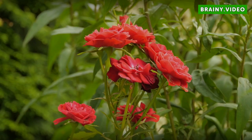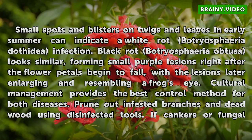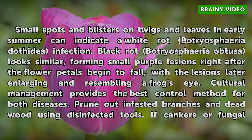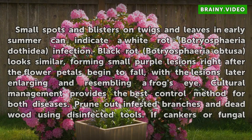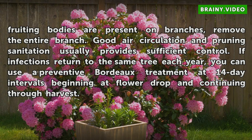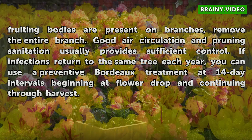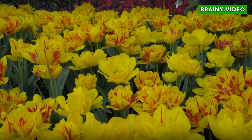Black and White Rots. Small spots and blisters on twigs and leaves in early summer can indicate a White Rot (Botryosphaeria dothidea) infection. Black Rot (Botryosphaeria obtusa) looks similar, forming small purple lesions right after the flower petals begin to fall, with the lesions later enlarging and resembling a frog's eye. Cultural management provides the best control method for both diseases — prune out infested branches and deadwood using disinfected tools. If cankers or fungal fruiting bodies are present on branches, remove the entire branch. Good air circulation and pruning sanitation usually provide sufficient control. If infections return each year, you can use a preventive Bordeaux treatment at 14-day intervals beginning at flower drop and continuing through harvest.